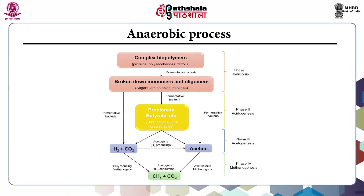This figure shows the different stages of the anaerobic process. In stage one, hydrolysis, complex biopolymers are broken down into simple monomers and oligomers — sugars, amino acids, and peptides — by fermentative bacteria. In stage two, acidogenesis, monomers are further converted into volatile fatty acids like propionic acid and butyric acid. In phase three, propionates and butyrates are converted into acetates, carbon dioxide, and hydrogen. In the last phase, methanogenic bacteria break down acetates into methane and carbon dioxide.